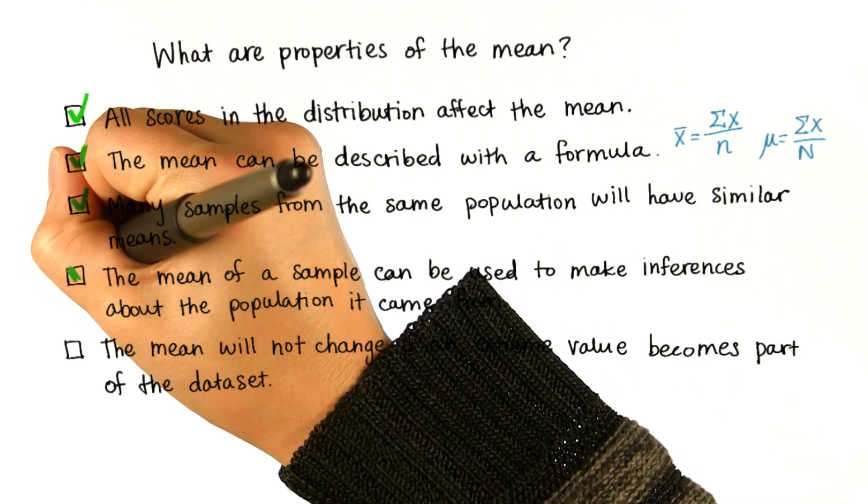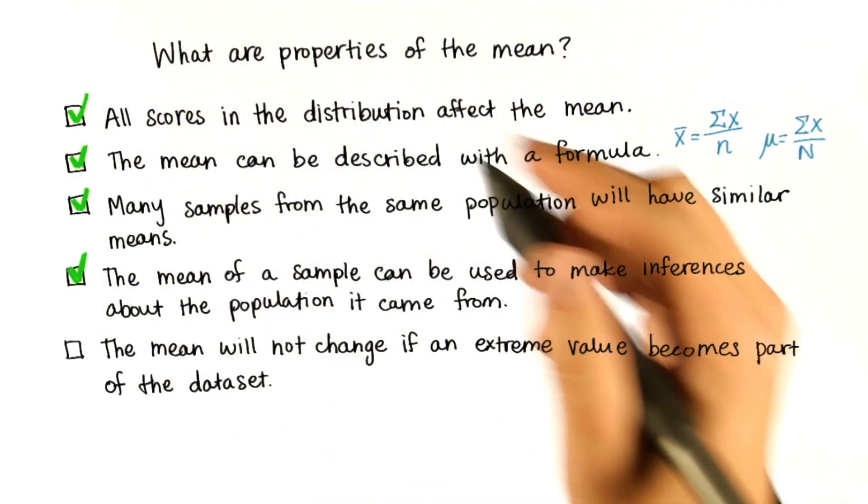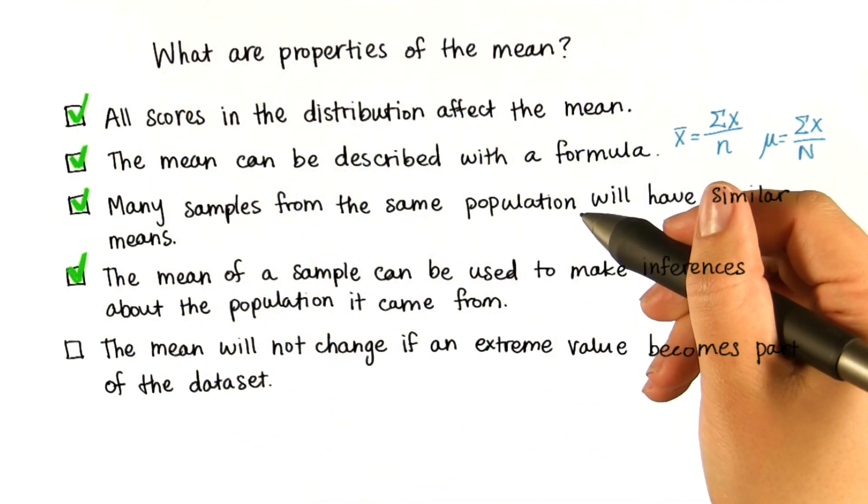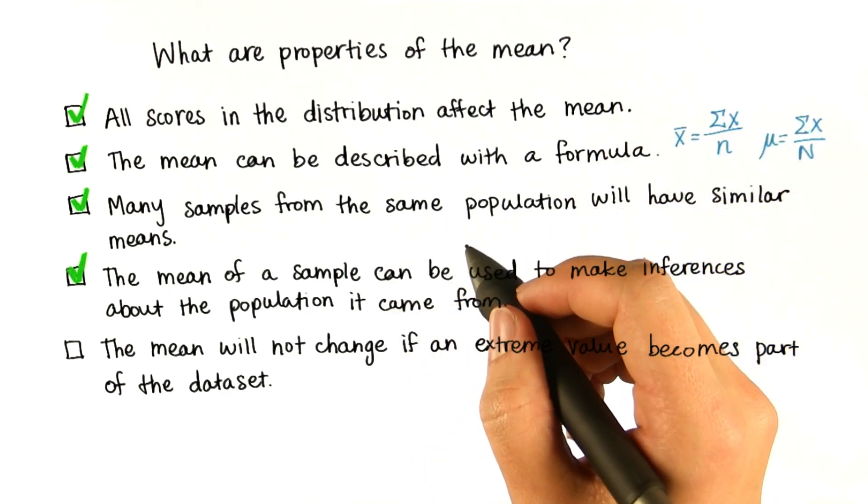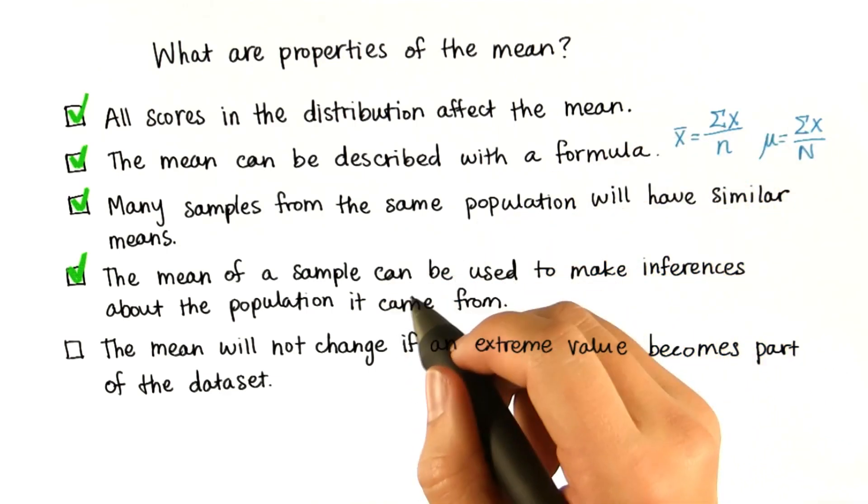Also, the mean of a sample can be used to make inferences about the population it came from. This relates to this last property of the mean. Because you saw that all the samples are pretty similar, and that they roughly approximated the population mean.